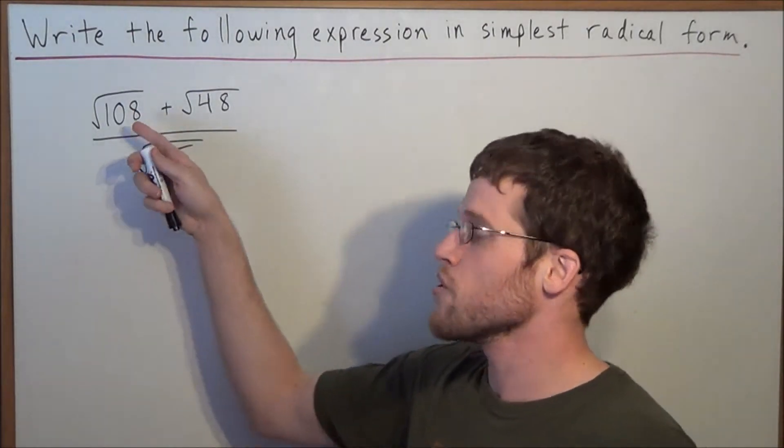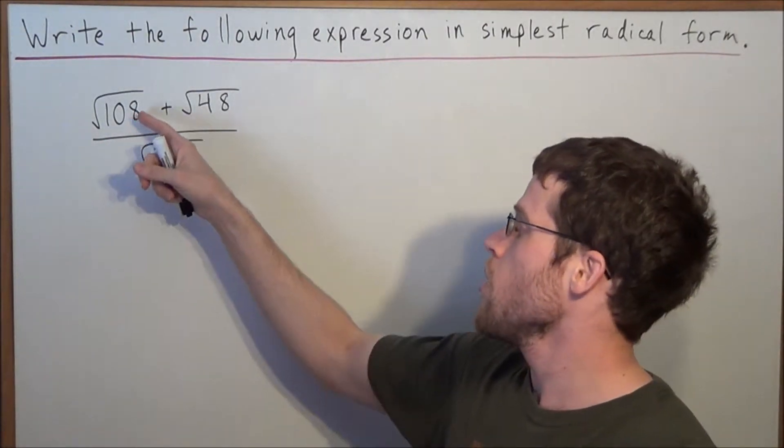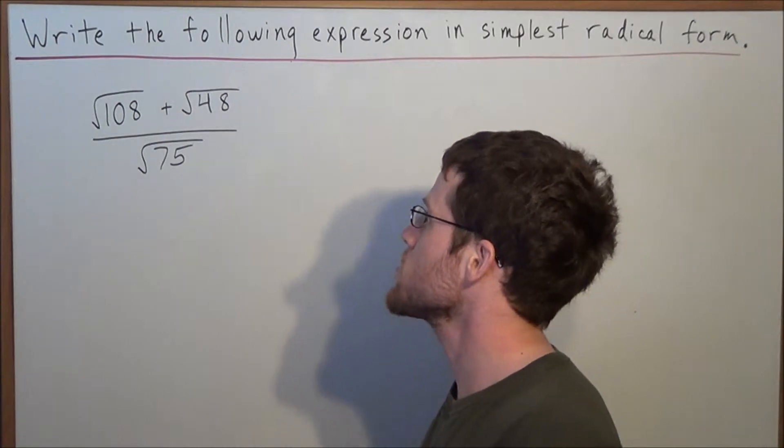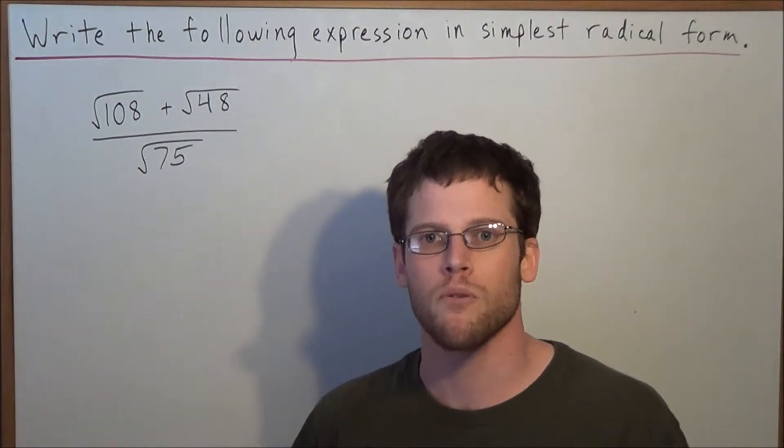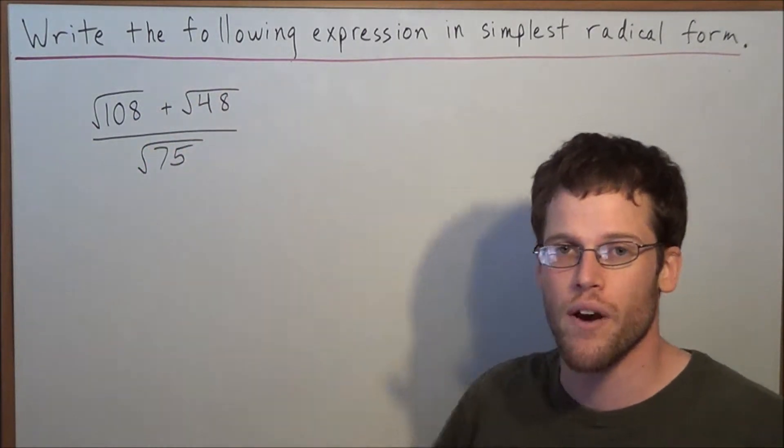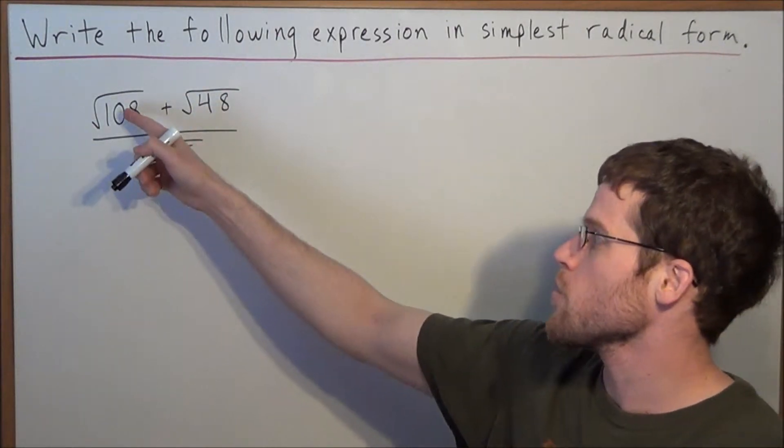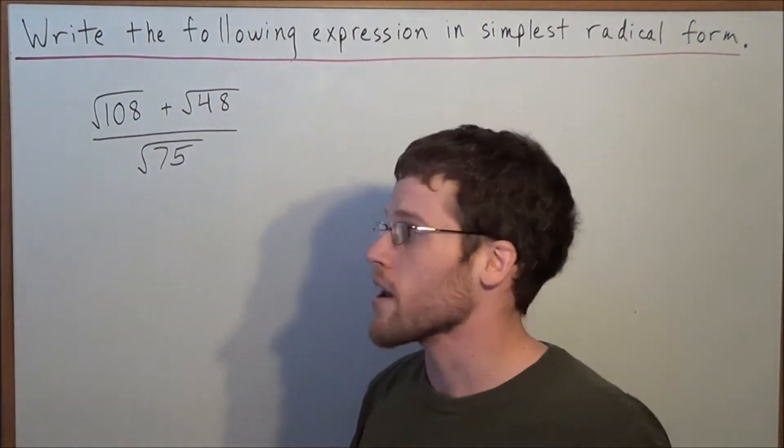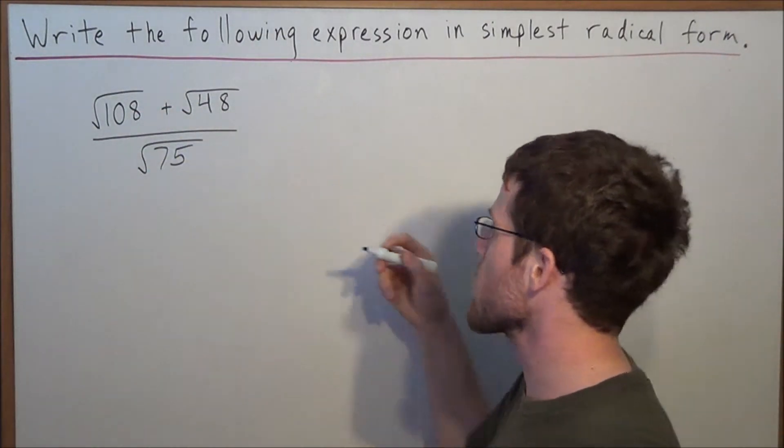But remember, don't fall for the trap. Most students will do 108 plus 48 is 156, and then they'll start breaking down radical 156. But remember, we can't add the numbers under the radical. We need to make sure that we generate matching numbers under the radical first.